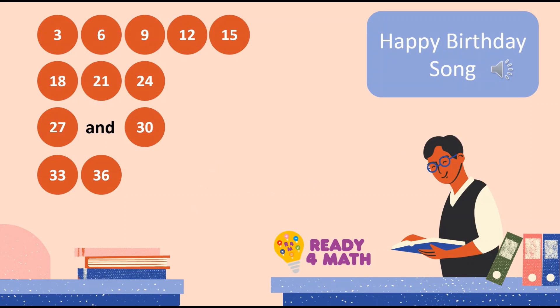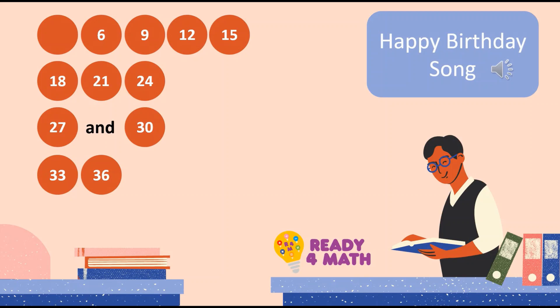This time, I'll be removing the numbers one by one to help you memorize the multiplication facts. Let's begin. Let's sing: 3, 6, 9, 12, 15, 18, 21, 24, 27, and 30, 33, 36. Well done.